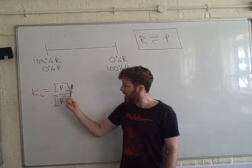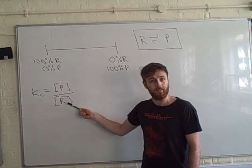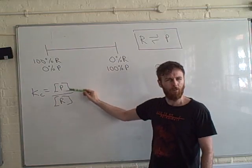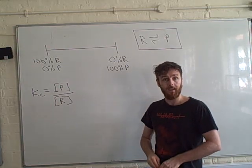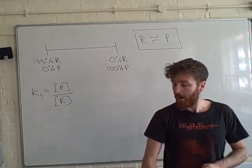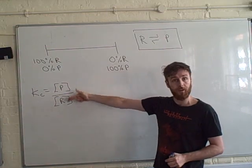And just down here I've got the KC expression, which is products over reactants, raised to their molar ratio. Let's just say the molar ratios are both 1, just to keep this nice and simple. So let's say that when I'm finding my KC, we're going to find our concentrations here.